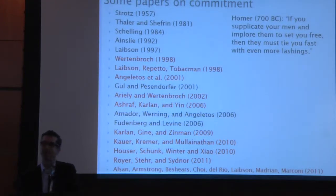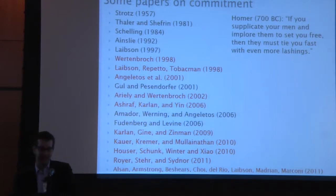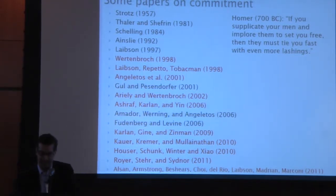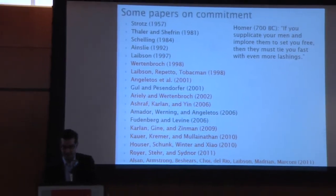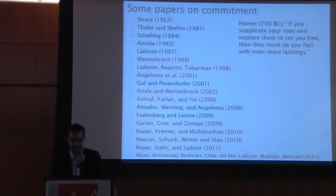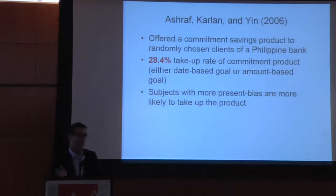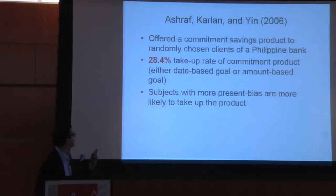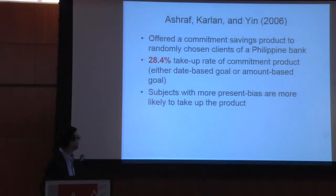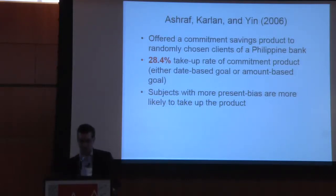That gets to the issue of commitment. There's lots of work now in the beta-delta world about how people tie their own hands. One of the key early papers is Ashraf, Carlin, and Yin. They offer a commitment savings account to Philippine customers — 28% of the people offered the commitment account take it up. They're basically not going to have access to their money until they reach a date-based or amount-based goal. And they find that people with more present bias are more likely to take it up.